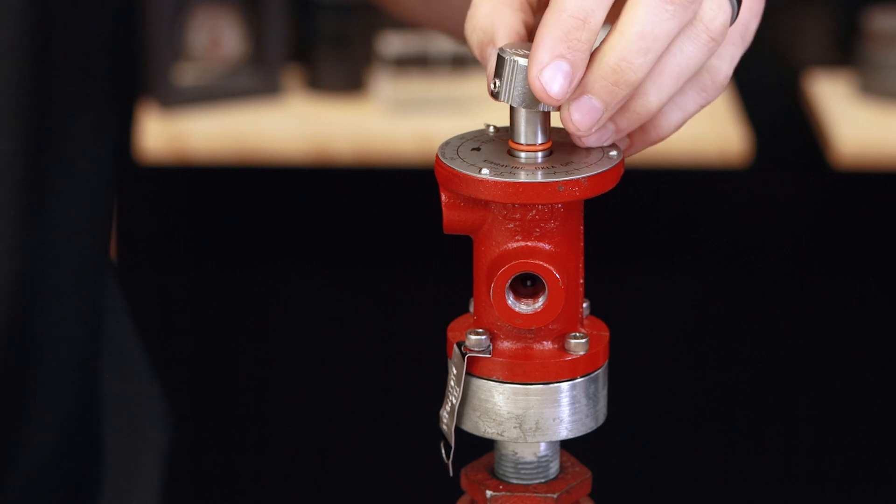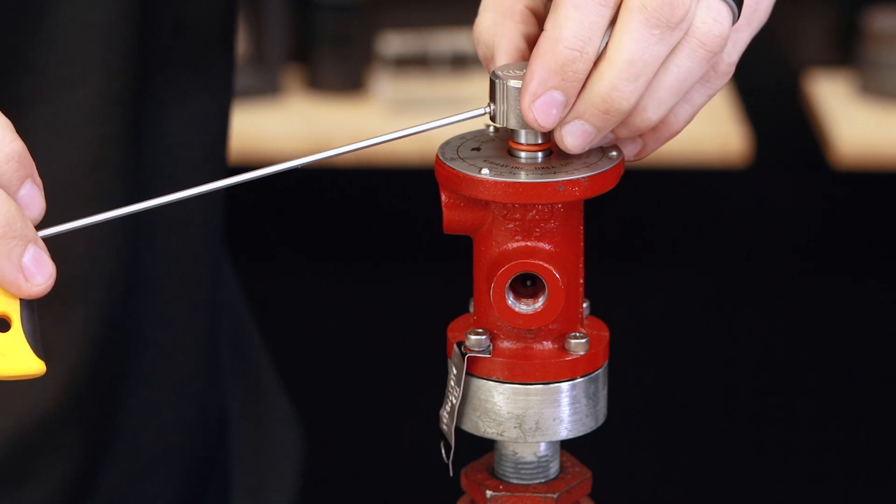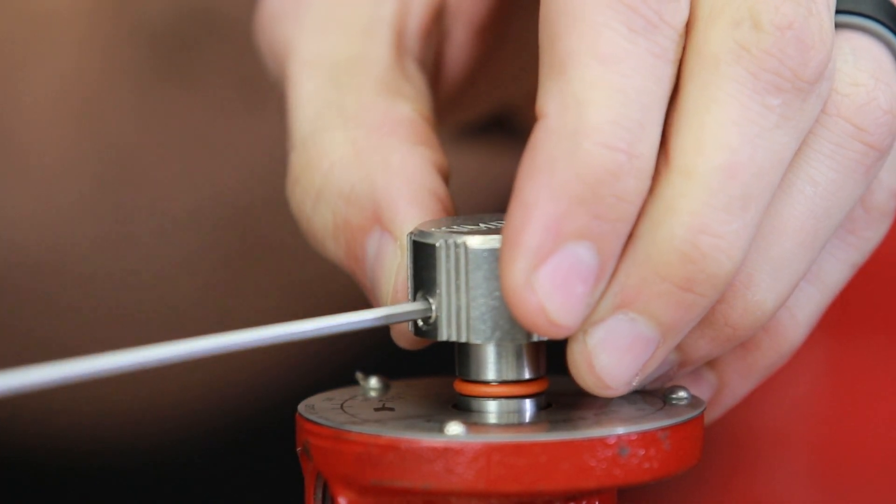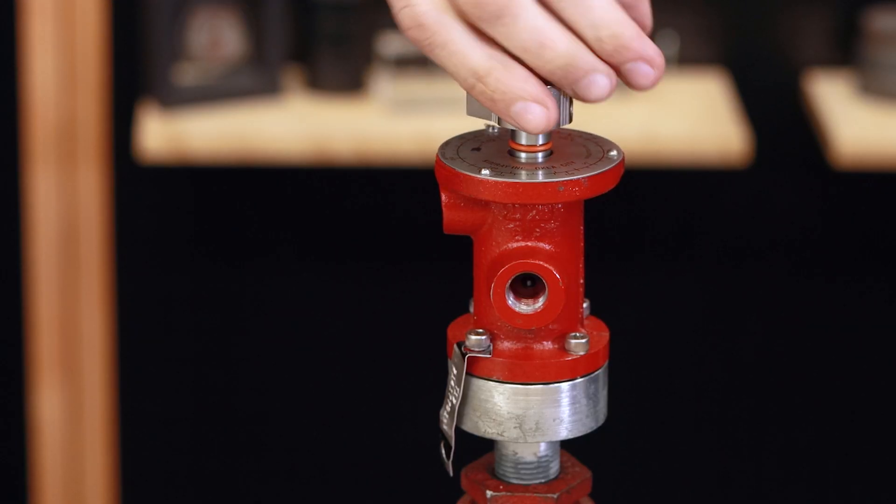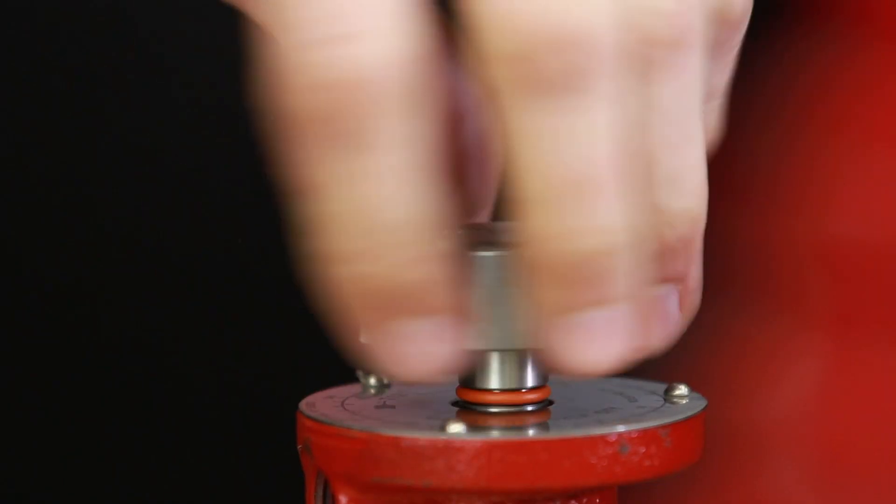Place the adjustment knob onto the seat and use a 3/32 hex key to thread in the set screw. Turn until threads are engaged so you can no longer see the O-ring.